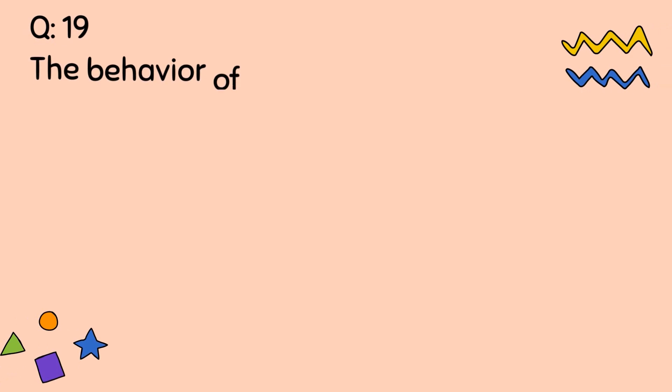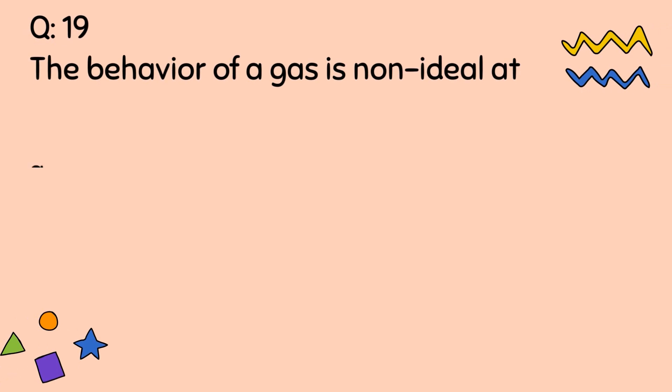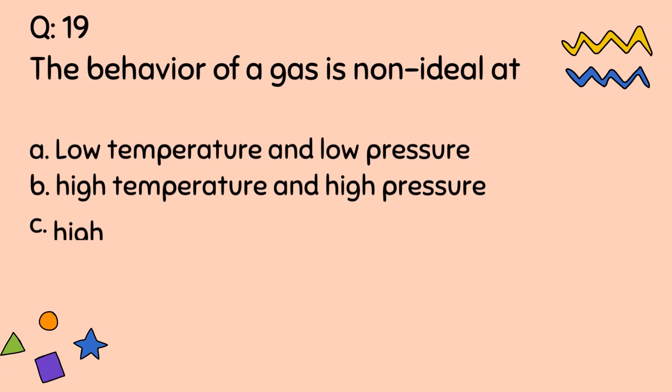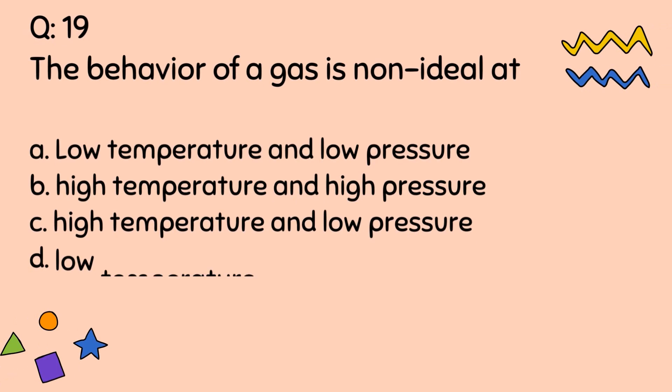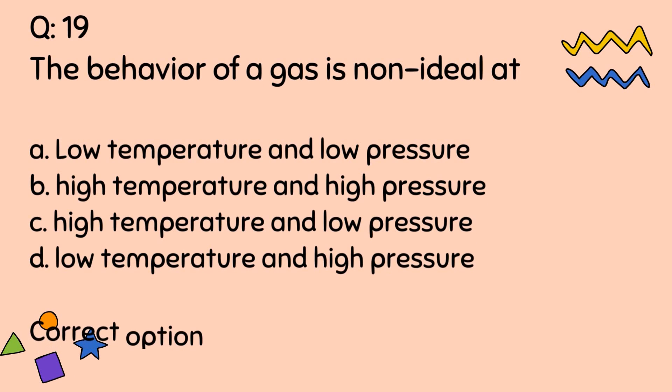Question number 19. The behavior of a gas is non-ideal at: A. Low temperature and low pressure. B. High temperature and high pressure. C. High temperature and low pressure. D. Low temperature and high pressure. Correct option is D.